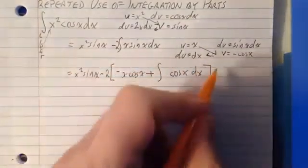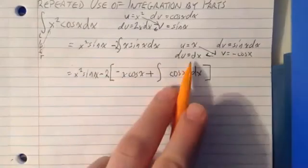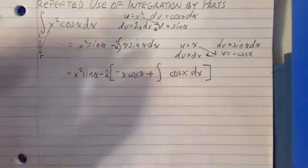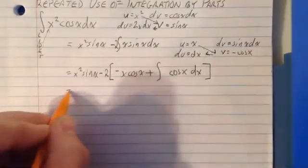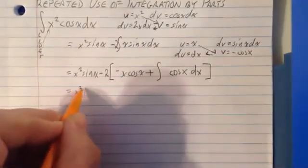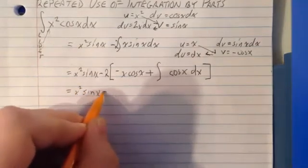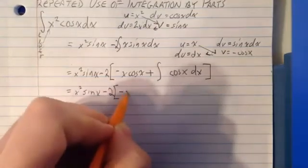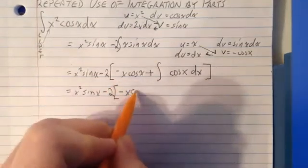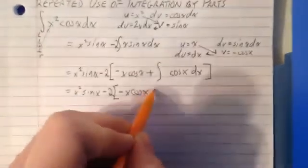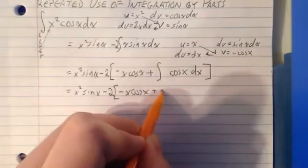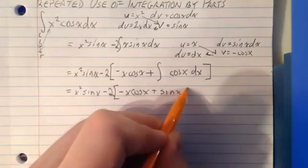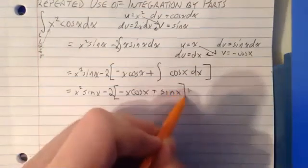Okay, so notice the v and the du, there's no x in here. So now I know how to anti-differentiate that cosine. So x squared sine x minus 2 times the quantity x cosine x plus the anti-derivative of cosine is sine x. And then I'm going to put a plus c on the outside.